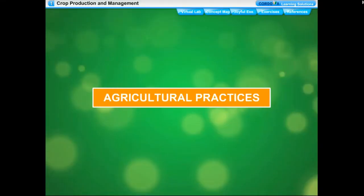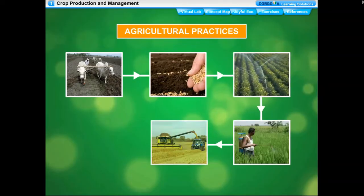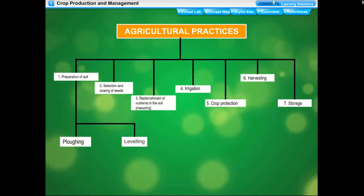Agricultural practices are several activities in a particular sequence undertaken by farmers over a period of time to cultivate a good crop. These include: preparation of soil, selection and sowing of seeds, plowing, leveling, replenishment of nutrients in the soil, manuring, irrigation, crop protection, harvesting, and storage.